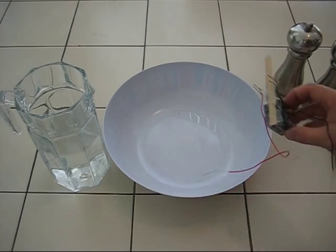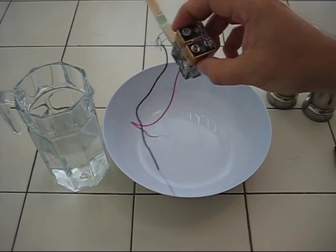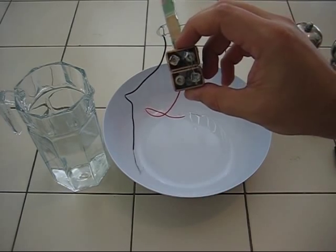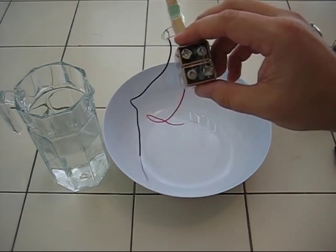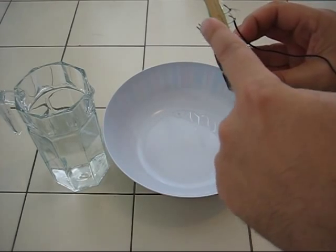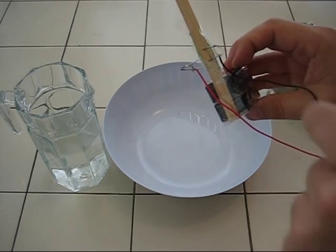And here we have the magneto-hydrodynamic drive. We have two 9-volt batteries connected in series, making 18 volts. This is the positive pole. It's just a piece of metal, and that's the negative pole.